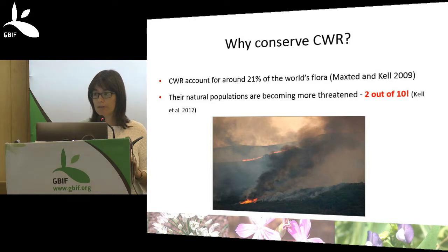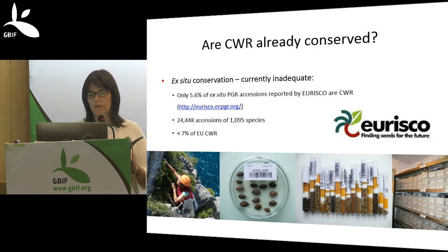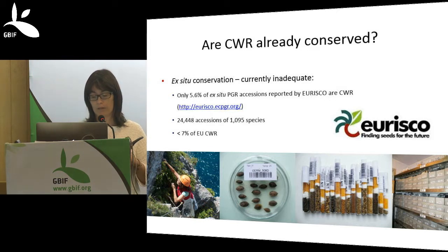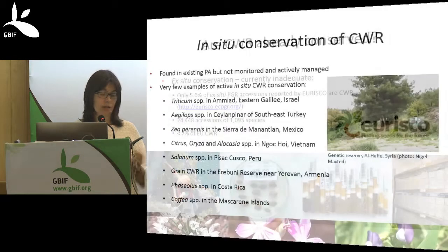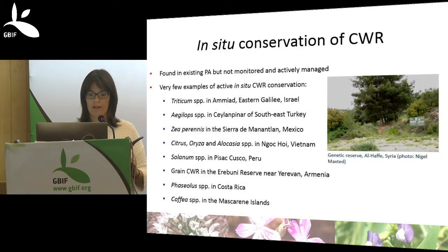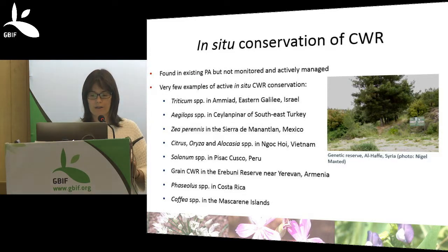Despite their importance, crop wild relative conservation is currently inadequate. Ex situ conservation of these wild species remains insufficient, and though some efforts are ongoing they are still in early stages. They are found in existing protected areas but are not actively managed or monitored. There are a few examples of crop wild relative conservation: genetic reserves for wild relatives of wheat in Israel, maize in Mexico, and active conservation of wild potato species in Peru.